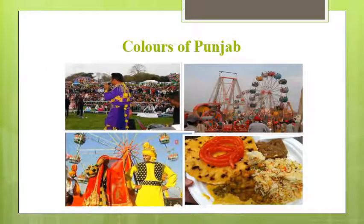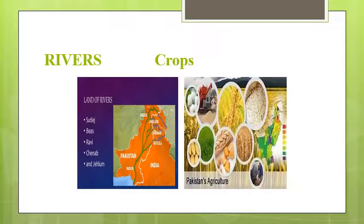Let's start with the province of Punjab. Punjab is the second largest and most populated province of Pakistan. It is called the land of rivers, as four of the five major rivers, including the River Indus, flow through it. Agriculture is the main component of Punjab's economy. Crops such as wheat, cotton, sugarcane, and rice are grown here.